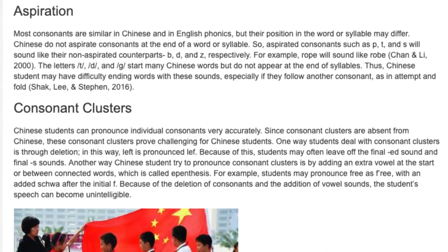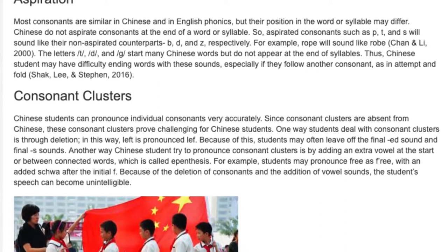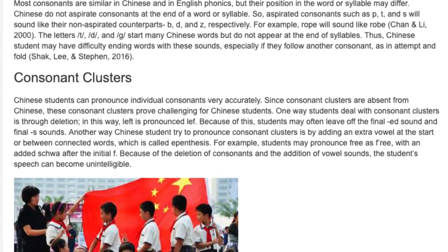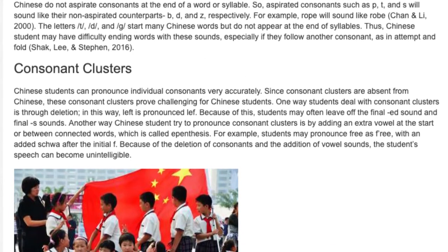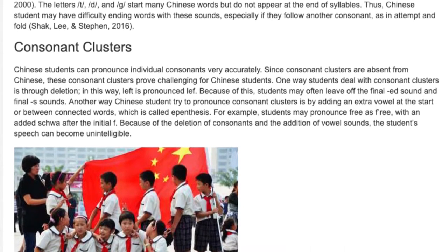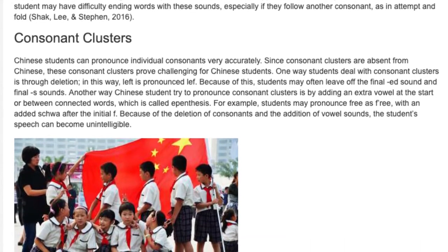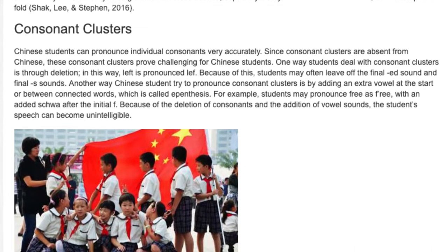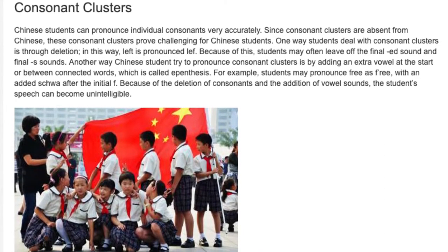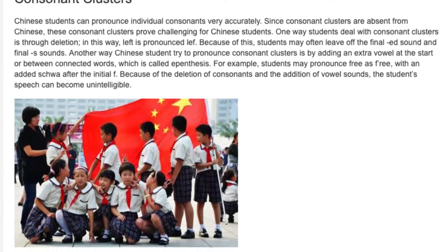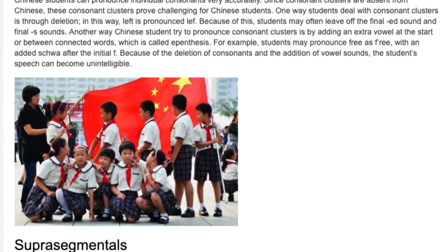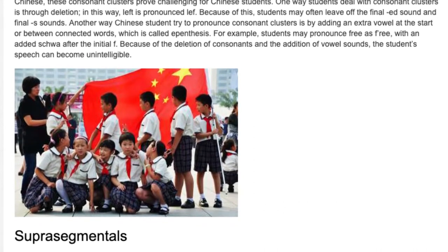Chinese students can pronounce individual consonants very accurately. Since consonant clusters are absent from Chinese, these clusters prove challenging. One way students deal with consonant clusters is through deletion — for example, 'left' is pronounced 'lef'. Because of this, students may often drop the final -ed and final -s sounds. Another way Chinese students try to pronounce consonant clusters is by adding an extra vowel at the start or between connected sounds, which is called epenthesis. For example, students may pronounce 'free' with an added schwa after the initial F. Because of consonant deletion and the addition of vowel sounds, the student's speech can become unintelligible.